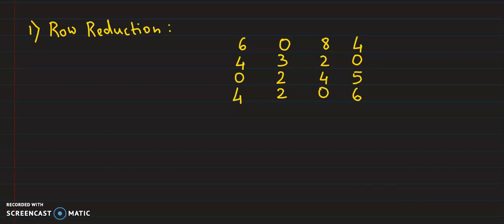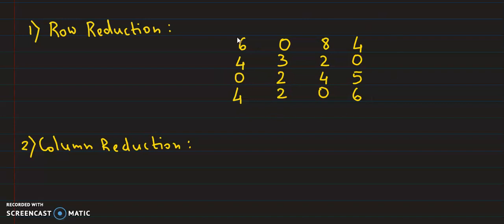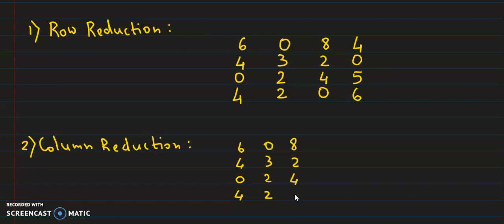The second step is column reduction. After row reduction, we go for column reduction. Looking at the first column, the minimum value is 0, so this column remains as it is: 6, 4, 0, 4. The second column minimum is also 0, so it stays: 0, 3, 2, 2. The third column minimum is 0: 8, 2, 4, 0. The fourth column minimum is 0: 4, 0, 5, 6. So the column reduction produces no new matrix — it is the same as the row reduction matrix.